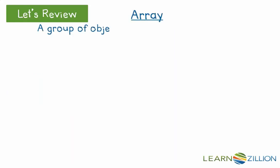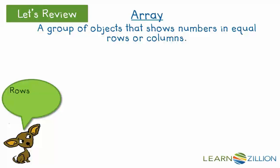Arrays are a group of objects that show numbers in equal rows or columns. Remember that rows go side to side, and columns go up and down.